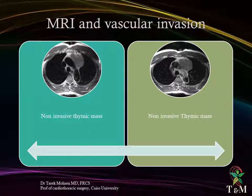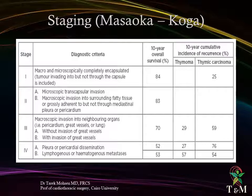MRI in many cases determines resectability and vascular invasion; the modality is superior to contrast CT scan, particularly in borderline cases. The modified Masaoka staging system is widely used for both thymomas and thymic carcinomas: Stage 1 — macroscopically and microscopically completely encapsulated mass, not invading the capsule. Stage 2a — microscopic transcapsular invasion. Stage 2b — macroscopic invasion into surrounding fatty tissue or grossly adherent to but not through mediastinal pleura or pericardium. Stage 3 — macroscopic invasion into neighboring organs; 3a without invasion of great vessels, 3b with invasion of great vessels. Stage 4a — pleural or pericardial dissemination. Stage 4b — lymphogenous or hematogenous metastasis.